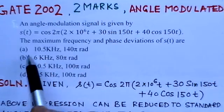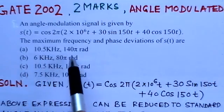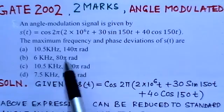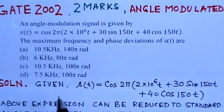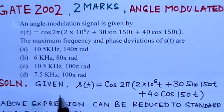There are four options, like first option is 10.5 kHz, 140π radians, etc. There are four options and we have to find out which is the right option here.